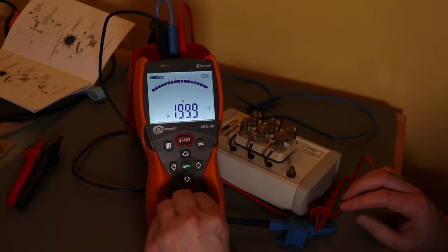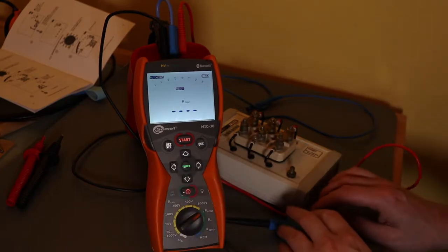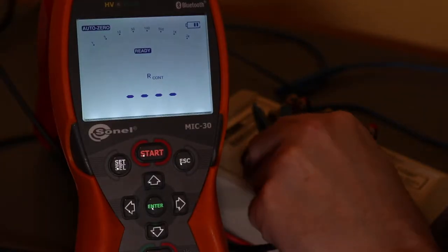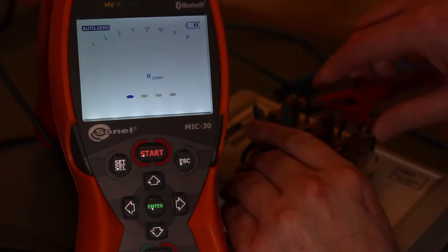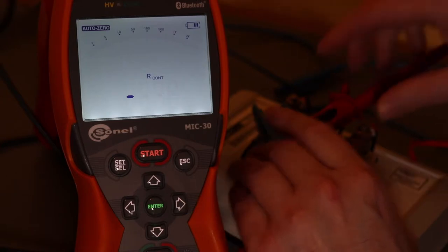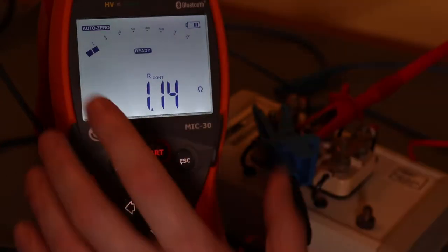Now I can move back to the continuity function and we'll go for the first winding resistance measurement. That's 1.14 ohms.